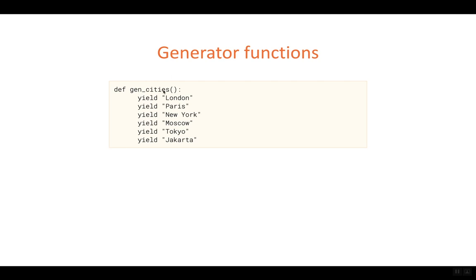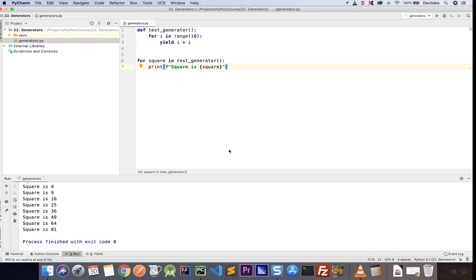So for example, here we have generate cities and we are yielding different city names. London, Paris, New York, Moscow and so on. And to use them, we have the same kind of function. We are printing, we are using it in a for loop to print out some string. So let's try that out.